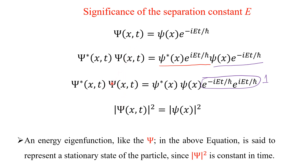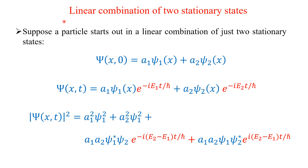This is the case for a single wave function. Now we will see what happens if we take the linear combination of wave functions — this is the important point of this lecture. For a single wave function the probability is independent of time, so it is called a stationary state. Now we will see what happens for a linear combination of two or more wave functions.